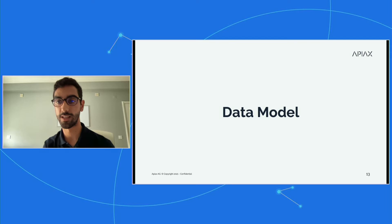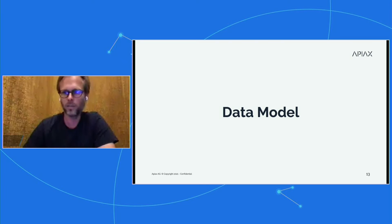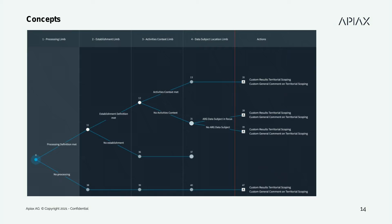Now I'll pass to my colleague Peter, who will give a bit more detail about our data model. Thanks, Gonzalo. I'll tell you more details about how we model the data and how we use Neo4j to support our knowledge graph. Let's start with a simple example — the trees that we built, the digital rules. This is again a tree from our data protection product. You can see we have to go through several steps to find out if we can process data or not. One example we'll now look at is from the second step: establishment limb.